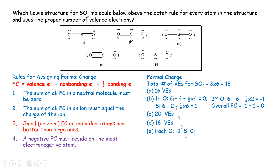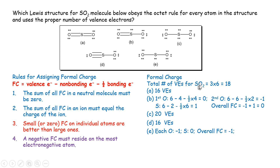For structure E, both oxygens have the same formal charge of negative one each, and sulfur has a formal charge of zero. Adding them up gives a total formal charge of negative two. That's incorrect because SO₂ is a molecule, not an ion — the sum must be zero. Therefore, B is the correct answer.